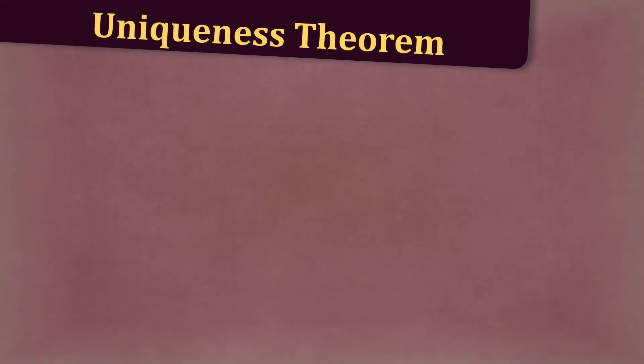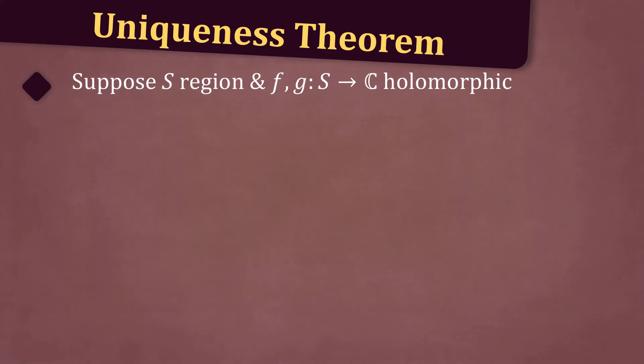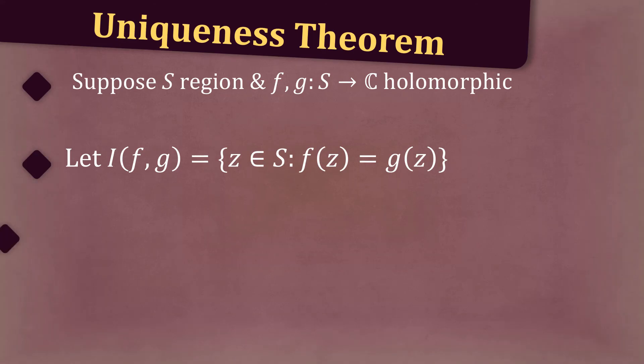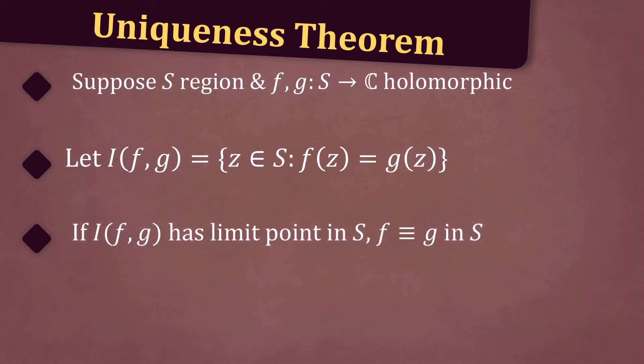Then, let's state the uniqueness theorem. Suppose s is a region and f and g go from s to the complex numbers and are both holomorphic. Let i of f and g equal the set of all z in s such that f of z is equal to g of z. If i of f and g has a limit point in s, then f is identically equal to g in s.